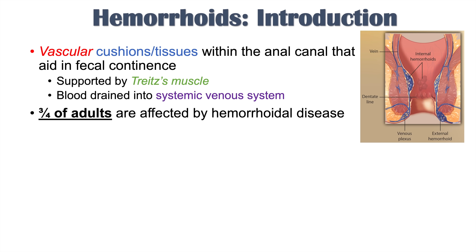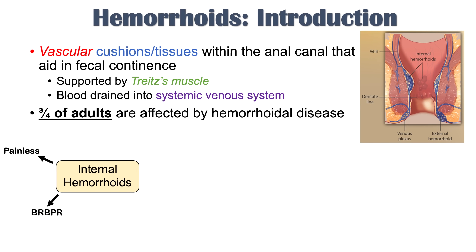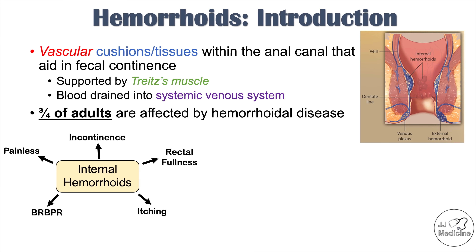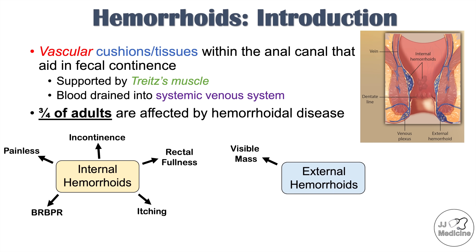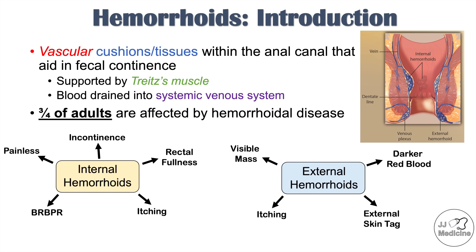It's important to note that three-quarters of adults are affected by hemorrhoidal disease. Now let's briefly discuss the signs and symptoms. Internal hemorrhoids are oftentimes painless, presenting with bright red blood per rectum (BRBPR), itching, a sensation of rectal fullness, and possible incontinence. External hemorrhoids are slightly different — there's a visible mass, itching, external skin tags, darker red bleeding, and they're oftentimes painful.